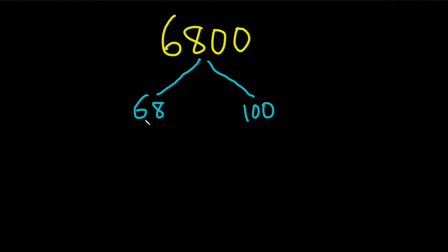And then 68 can be broken down even further. It's 2 times 34. This is 2 times 34. And 34 is 2 times 17. So this is 2 times 17. And then we can bring this one down.